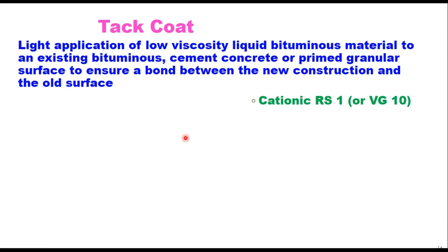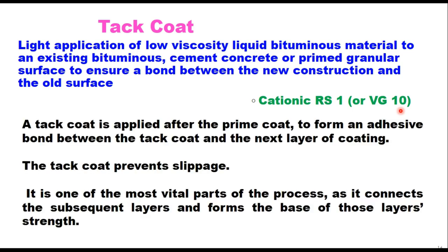Another interface treatment is tack coat — it is a light application of low viscosity liquid bituminous material to an existing bituminous, cement concrete, or primed granular surface to ensure a bond between the new construction and the old surface. It is applied after the prime coat on cement concrete or granular base material, or directly on an existing bituminous surface before laying a new layer. The material used for tack coat is cationic rapid setting emulsion, or sometimes VG10 bitumen. The tack coat prevents slippage and connects subsequent layers, forming the basis of those layers' strength.